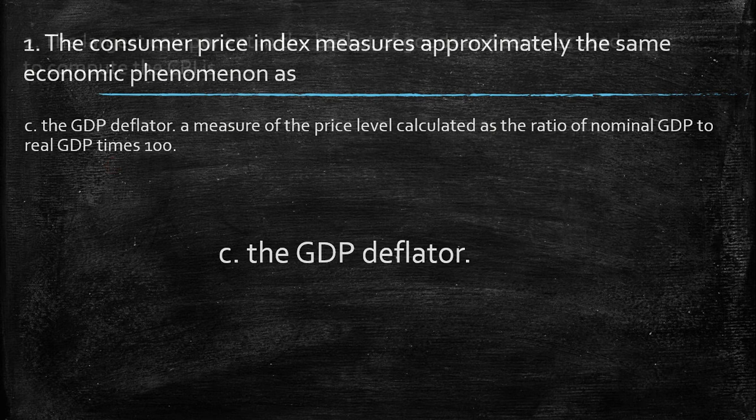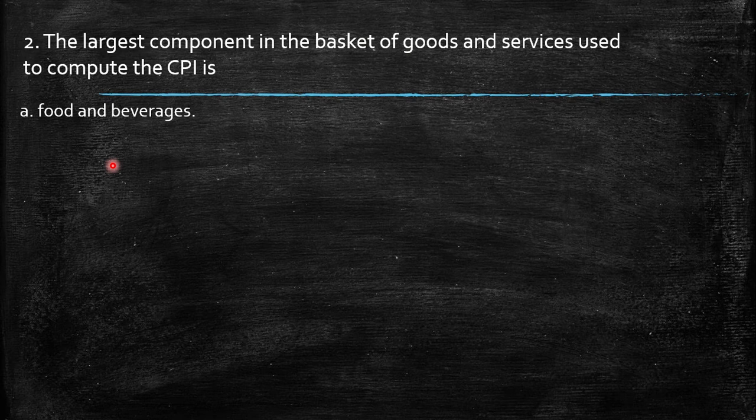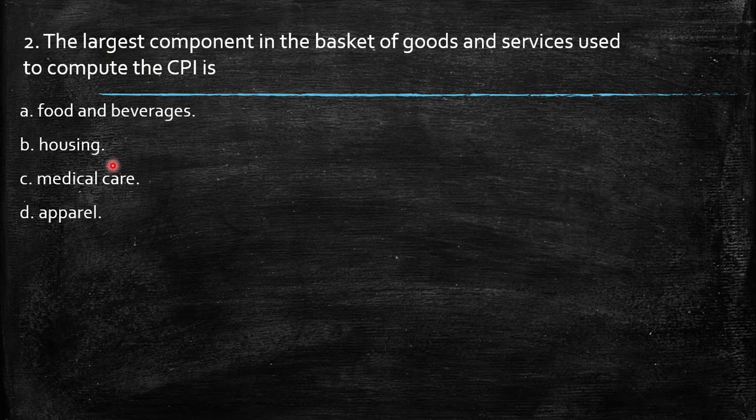Second, the largest component in the basket of goods and services used to compute the CPI. Which is going to be the higher weight for this basket? Food and beverages, housing, medical care, or apparel.